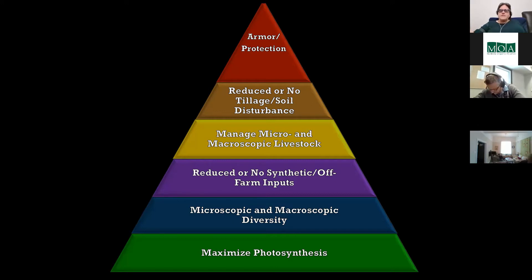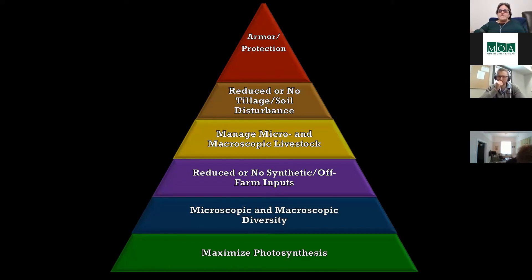Utilizing both microscopic and macroscopic livestock or organisms that are going to somehow stress the plant is a way of being able to do that. On a macroscopic scale, you have livestock and grazing animals. Wildlife can be a way of injuring or stressing the plant. You can have birds, bats, insects — all of these different types of organisms can put some stress on the foliar tissue of the plant.